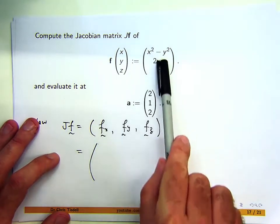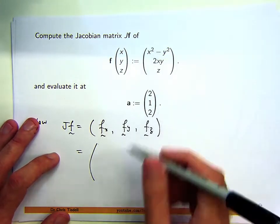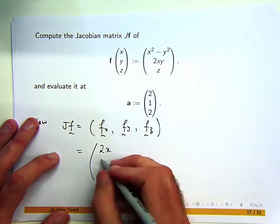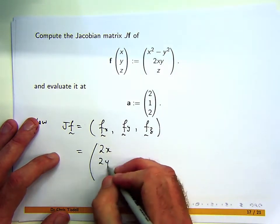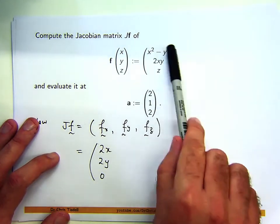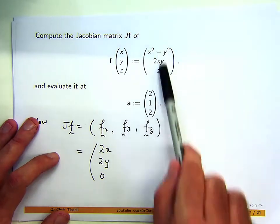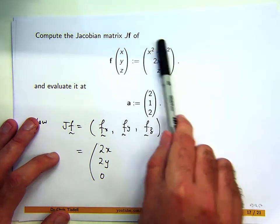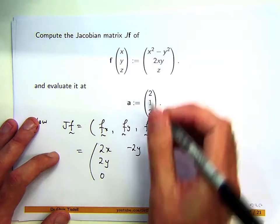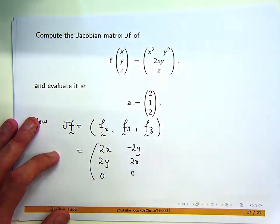Differentiate with respect to x in a component-wise fashion and write it down as a vector. The first component is going to be 2x, the second component is going to be 2y, and the third one is going to be 0. Then differentiate component-wise with respect to y: here I get negative 2y, the second component is 2x, and the third is 0.